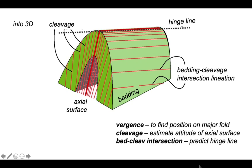We use vergence to find the position on the major fold. We can use cleavage to estimate the attitude of the axial surface. We can use the bedding-cleavage intersection to predict the orientation of the fold hinge line. That's cleavage and it's a really useful minor or small-scale structure. But you also get small-scale folding associated with larger-scale folds.